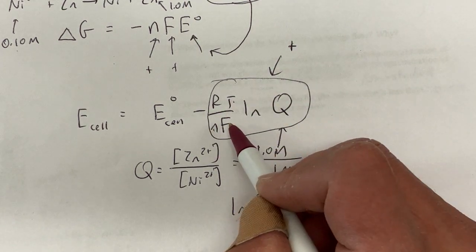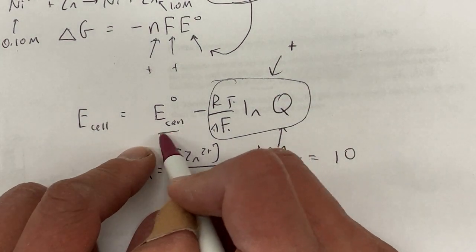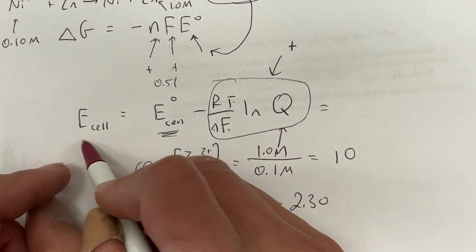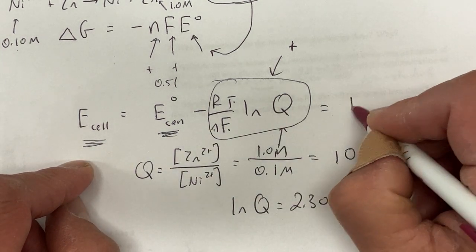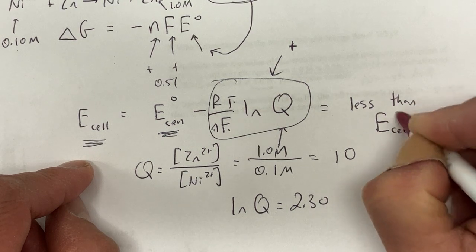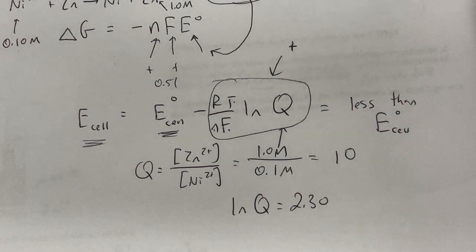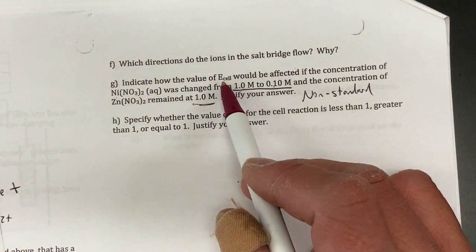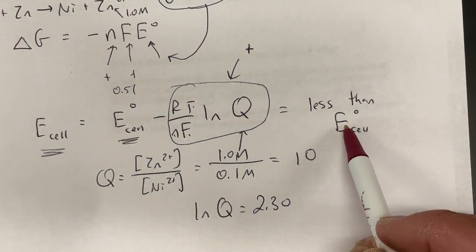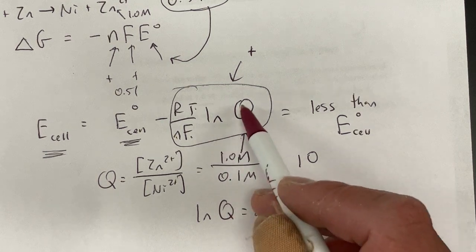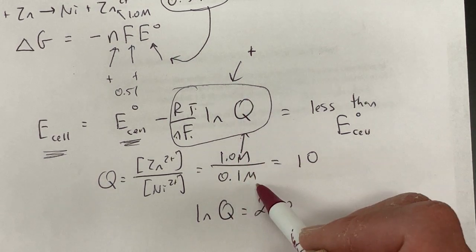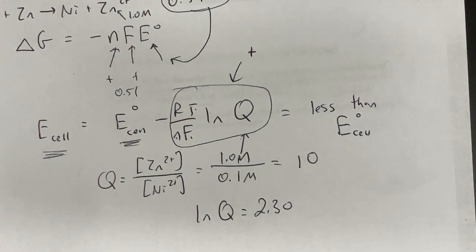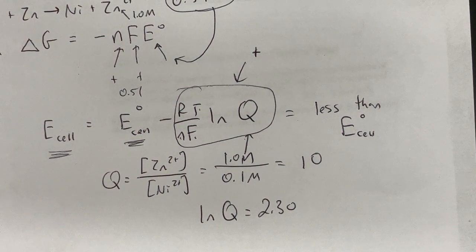So ln of Q is greater than 0, well that means this whole thing here is positive. So R is always positive, T is always positive, n is always positive, F is always positive. So this thing is positive. If E cell is some number, 0.51, minus a positive number, what is my new E cell going to be? Well it's going to be less than the original E cell. So if I want to justify this answer here, it says how will it affect the E cell? Well the new E cell is going to be less than the standard cell potential because—you say well ln of Q, Q is 10, so I would show how to calculate Q, and if you said ln of Q is greater than 1, that means this whole thing here is going to be less than the original value. So that's how you solve for that.